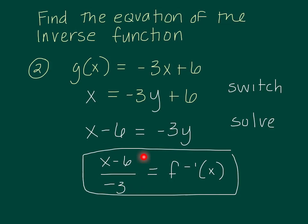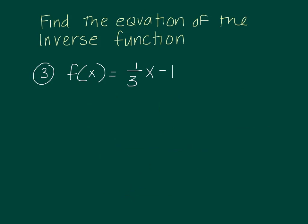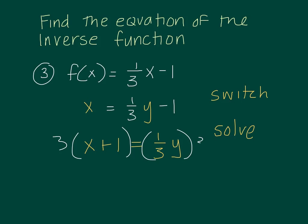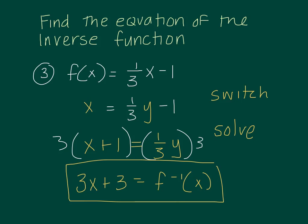Let's just do one more of these to make sure that we're feeling okay before we move on to the final concept. Once again, I'm going to start here by switching x and y. And now I'm going to solve for y. So I'm going to add 1. So I have x plus 1 equals 1 third y. I need to multiply both sides by 3 now to get rid of that 1 third. And I get 3x plus 3 is equal to our inverse function.